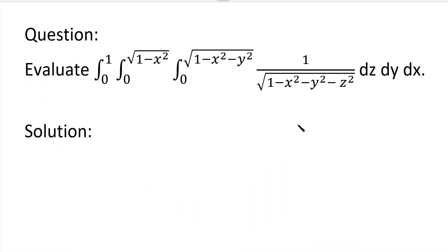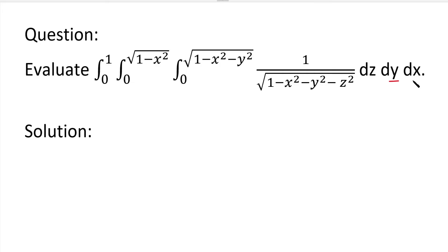Hi students. In this video, let's solve one simple problem from triple integration. The question is: evaluate the triple integral of 1 divided by root of (1 minus x square minus y square minus z square) dz dy dx, where z varies from 0 to root of (1 minus x square minus y square), y varies from 0 to root of (1 minus x square), and x varies from 0 to 1.